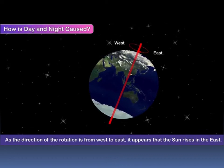As the direction of the rotation is from west to east, it appears that the sun rises in the east.